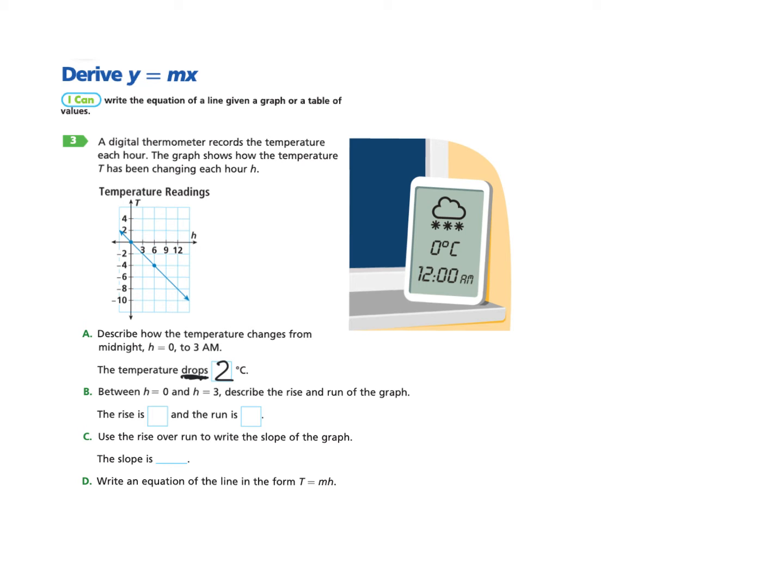Now part b is asking the same question but in a different way. Between h equals zero and h equals three, describe the rise and the run of the graph. Rise is how far up or down the graph has moved, run is how far right or left. Since we're going from h equals zero to h equals three, well that's the run right there - from zero to three, that is three units.